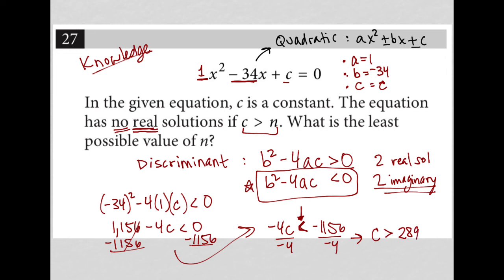The question says no real solutions if c is greater than n. n, therefore, must be 289. And therefore, that's our answer. So 289 is the correct answer here.